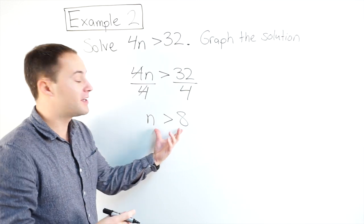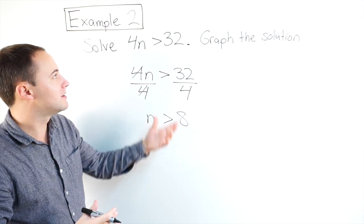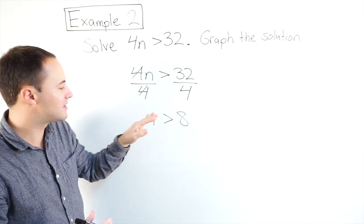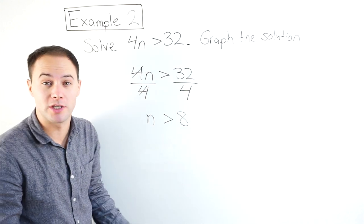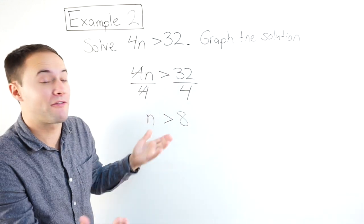Okay, this represents all my solutions to this inequality. Any number that's greater than 8 would be a solution to this inequality. So let's graph that.